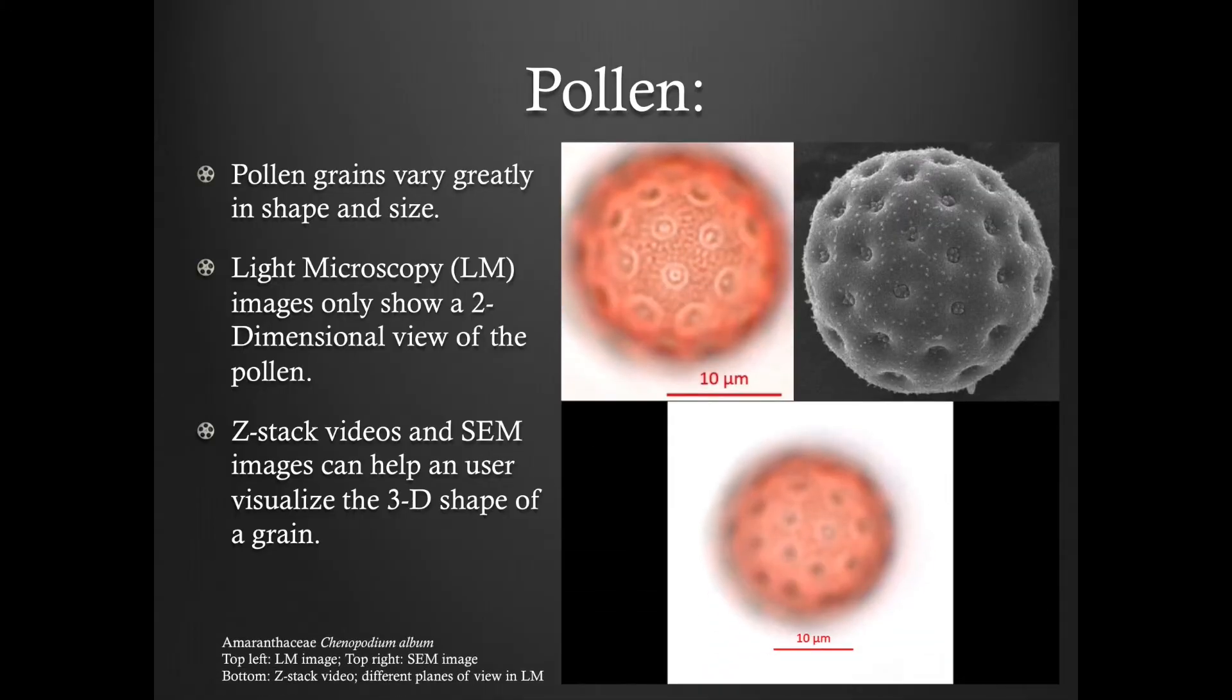Here is another example. This is an amaranthacy pollen grain. The image at the top left was taken with light microscopy. The image at the top right was taken with scanning electron microscopy. Below you can see the Z-Stack video. Videos such as these can help the user gain a better understanding of the morphological characteristics of the grain.